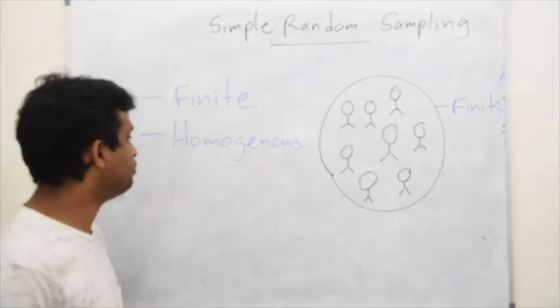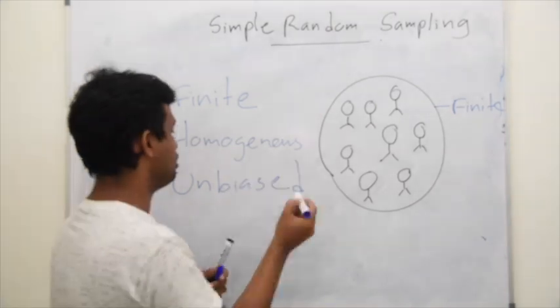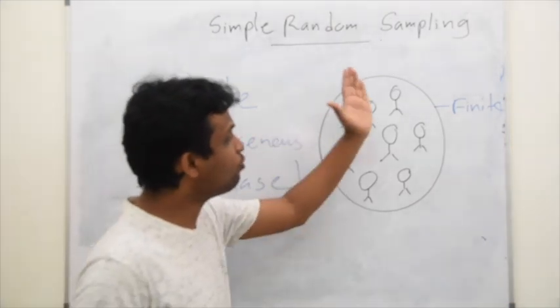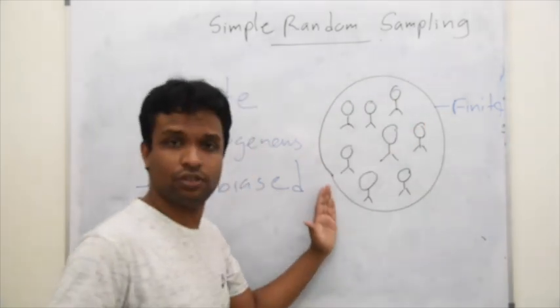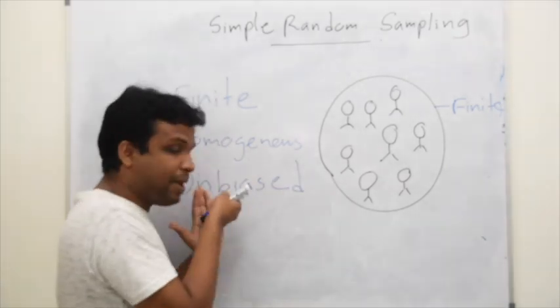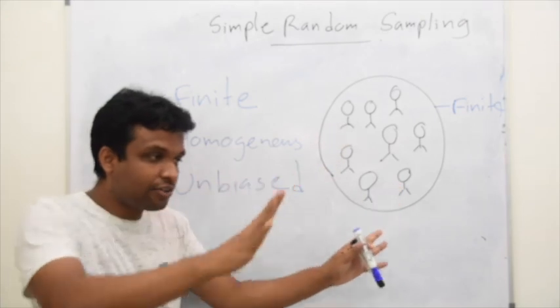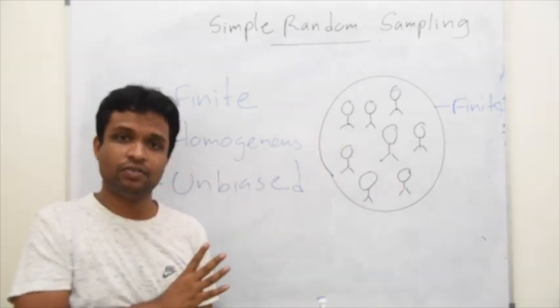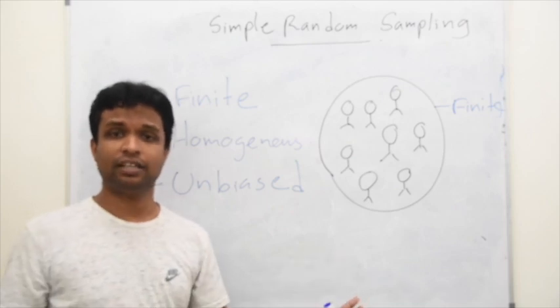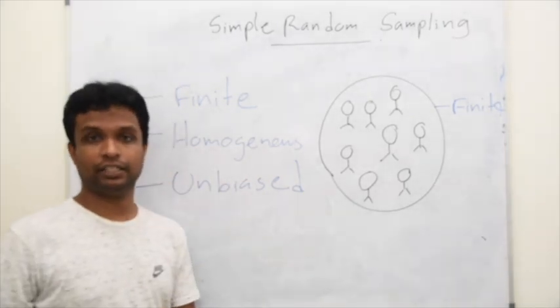Simple random sampling is the most unbiased technique. Why is that? Each and everyone in the population has equal chance to become a member of the sample. As soon as there are 100 individuals in a population, everybody has equal chance of selecting. Because of that, no bias is there. We call that the most unbiased sampling technique.